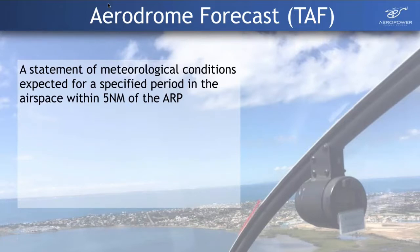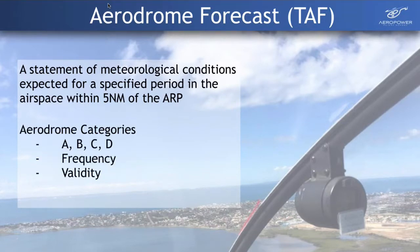An aerodrome forecast, or TAF, is defined as a statement of the meteorological conditions expected for a specified period in the airspace within five nautical miles of the aerodrome reference point. Each licensed aerodrome has a reference point on the ground used for survey work. There are different categories of airfields in Australia — Brisbane or Sydney International Airport is very different to a small country strip.